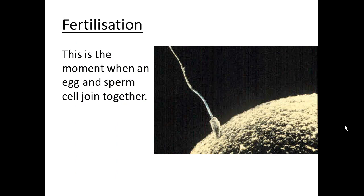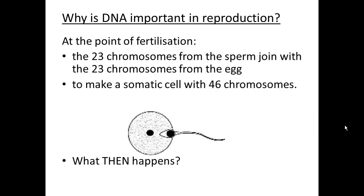Both the egg and sperm contain 23 chromosomes because they are involved in a process called fertilization, which happens during sexual reproduction. During fertilization, these two cells fuse together — their nuclei fuse together — so by the end of fertilization you have a new somatic cell because it will contain 46 chromosomes. You have 23 chromosomes from the sperm joined with 23 chromosomes from the egg, giving a new somatic cell with 46 chromosomes.